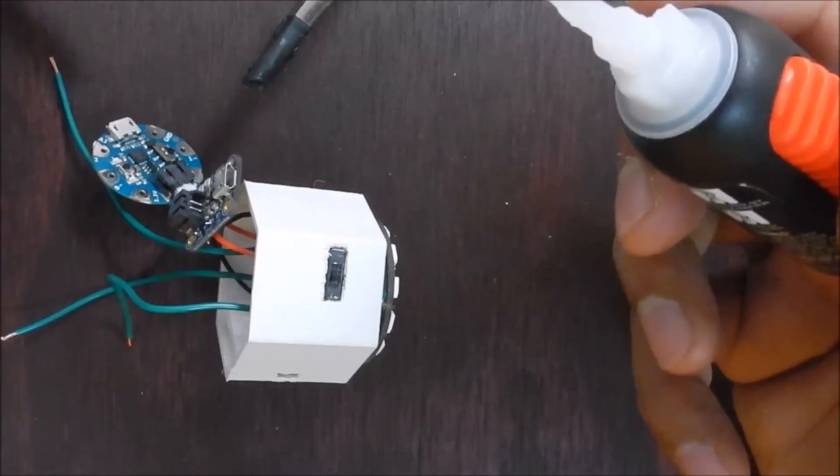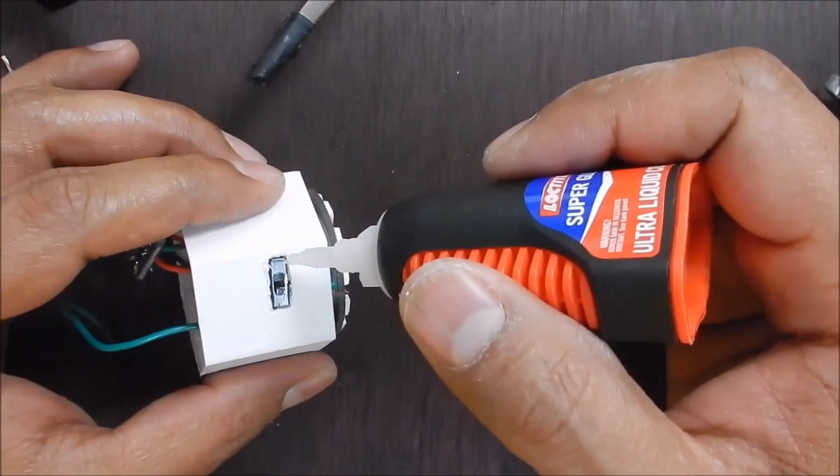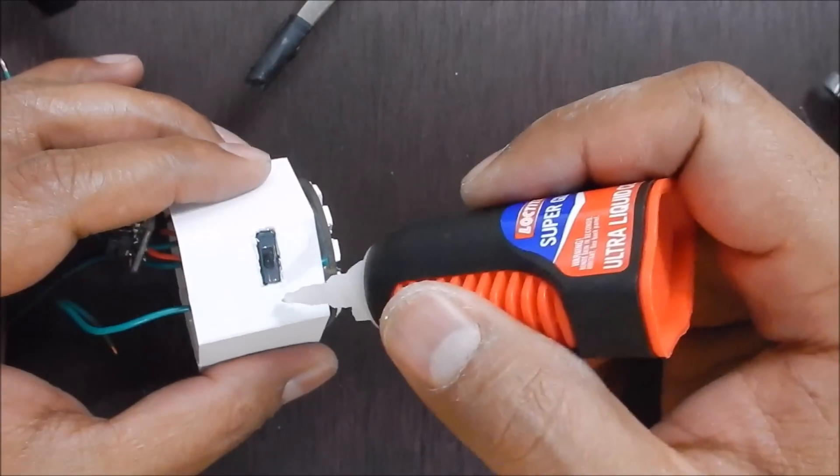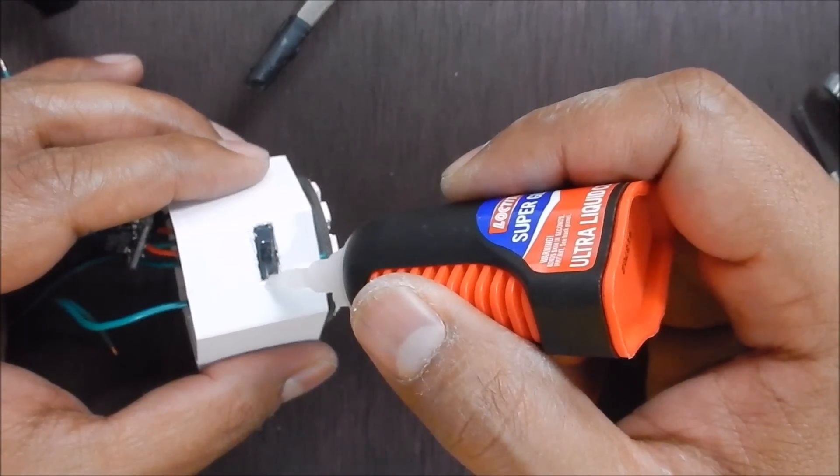Apply a few drops of crazy glue to the edges of the switch to hold in place. Don't apply glue all around the entire switch as it will prevent it from operating. You can also use hot glue instead.